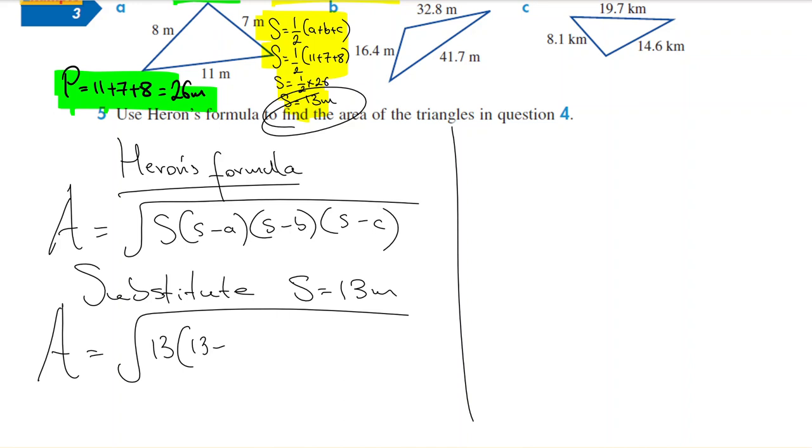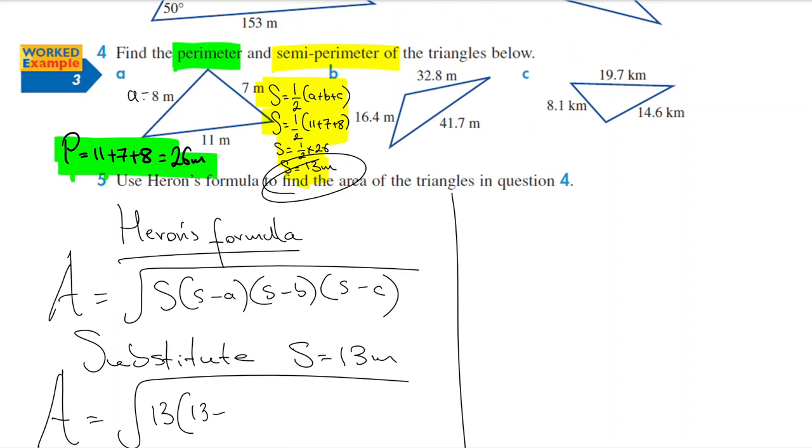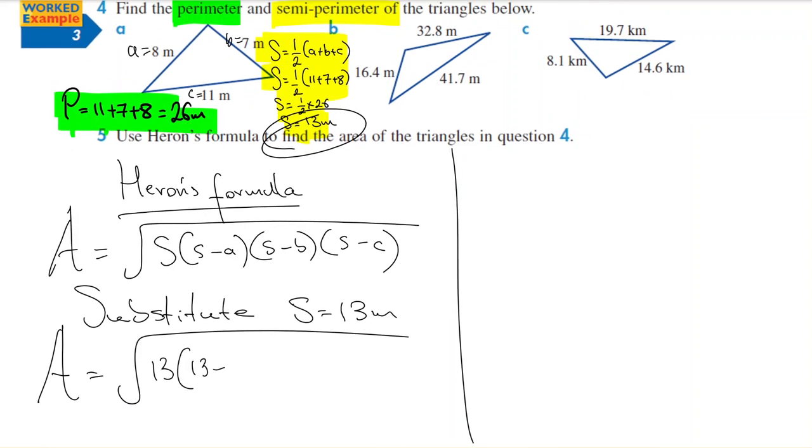You could label our triangle. We'll say a is 8, b is 7, and c is 11. Doesn't matter which way you do it. So 13 minus 8, 13 minus 7, and 13 minus 11. Now you could put this in your calculator straight away if you want.